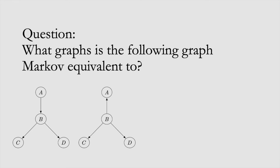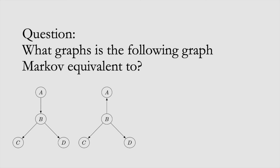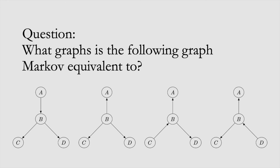We'll ensure we have the same skeleton by just flipping edges, and then make sure we don't introduce or remove any immoralities. This graph doesn't have any immoralities, so we just need to not introduce new ones. The first graph it's Markov equivalent to is obtained by flipping the A-to-B edge. Note that if we had flipped the C-to-B edge, we would introduce an immorality — C to B and A to B would form an immorality, so that graph is not Markov equivalent. So flipping A-to-B gives one equivalent graph, and there are two more: flipping C-to-B from that graph, and finally a graph where the D-to-B edge points to B with the other two edges pointing outward. Flipping the AB edge in that last graph would introduce a new immorality, putting it in a different Markov equivalence class.